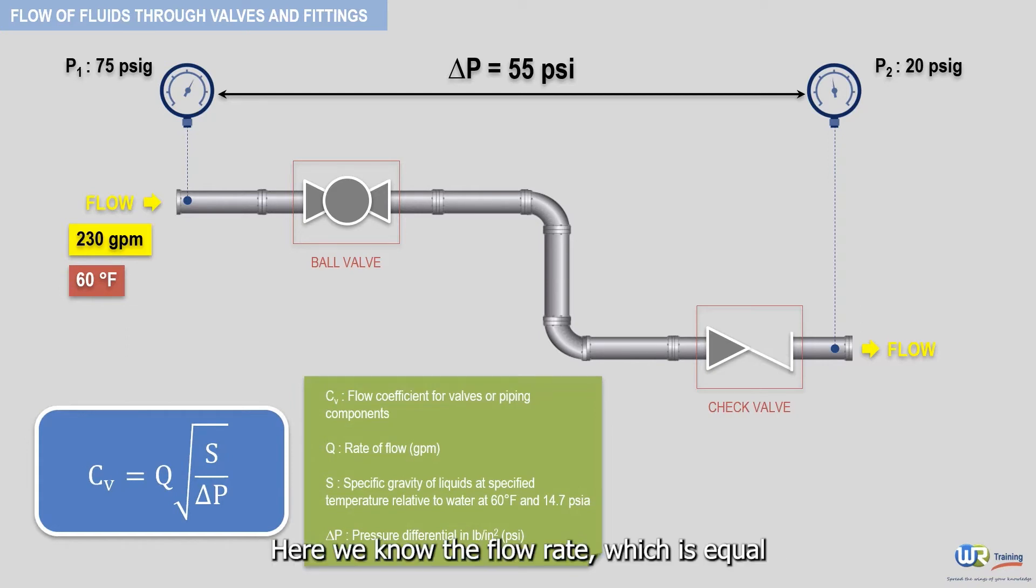Here we know the flow rate, which is equal to 230 GPM, and the pressure differential, 55 PSI. S refers to the specific gravity of the fluid. In our example, S equals 1, since the fluid is water.